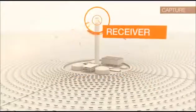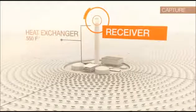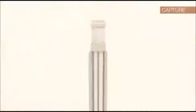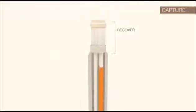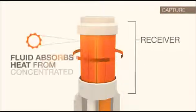The receiver sits on top of a 550 foot tower. Within the receiver, fluid flows through the piping that forms the external walls. This fluid absorbs the heat from the concentrated sunlight.